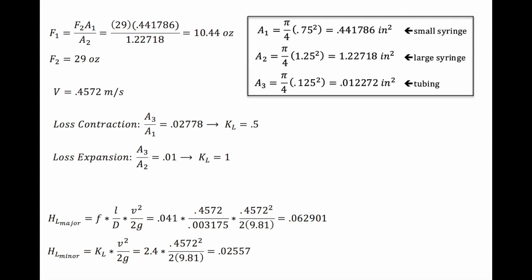We calculated areas for the small and large syringe and our tubing, and then we calculated our loss contraction and loss expansion in an effort to find where the friction loss in the system was. Our major and minor head loss came out to be nominal, which proves that the loss came from using lower quality household items.